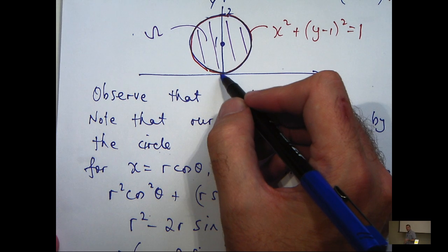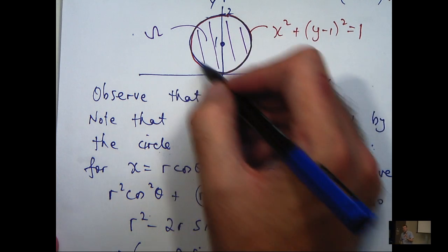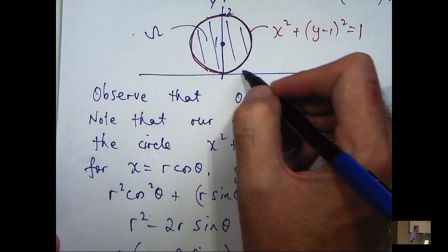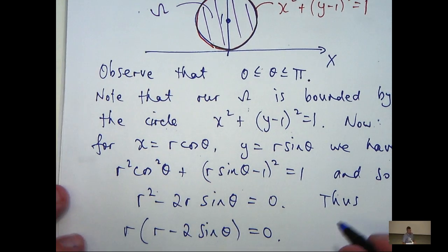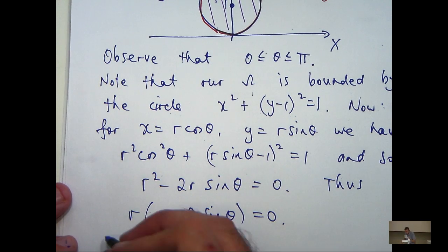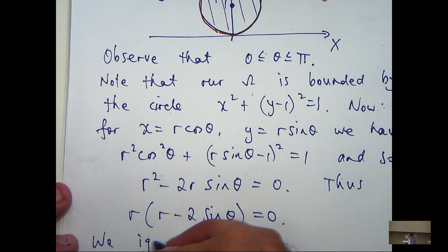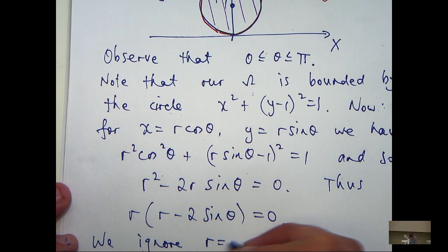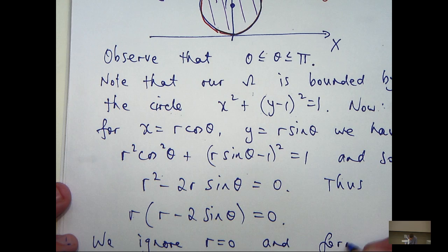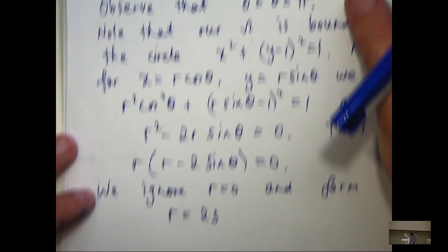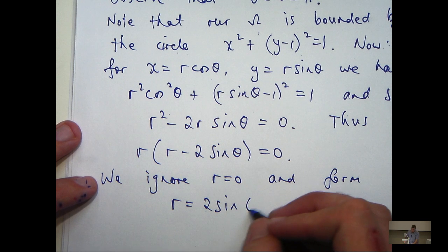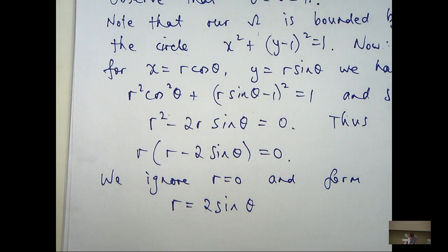But, if r equals 0, this is just the origin. So, that certainly doesn't describe the circle up here. So, let's ignore r equals 0 and form r equals 2 sine theta.